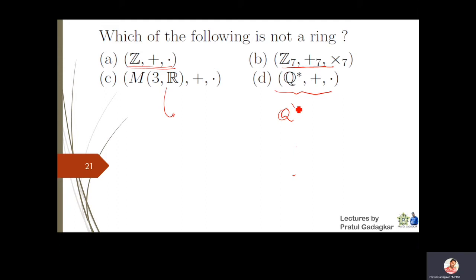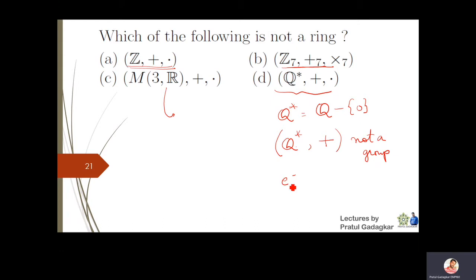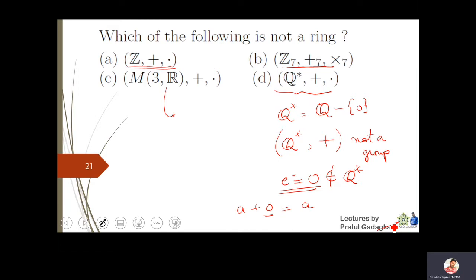Q* means the set of all rational numbers minus zero. Q* with respect to addition does not form a group, because the additive identity must be zero (since a + 0 = a), but zero is not in Q*. Therefore Q* with respect to addition and multiplication cannot form a ring. So the answer is the fourth option.